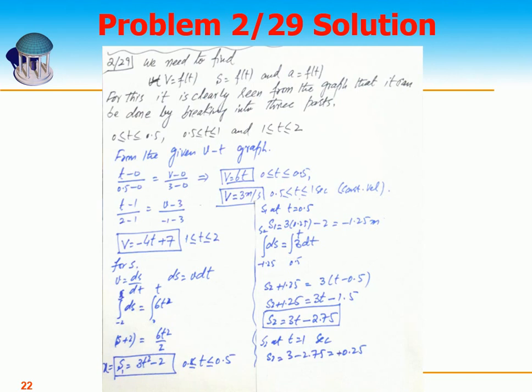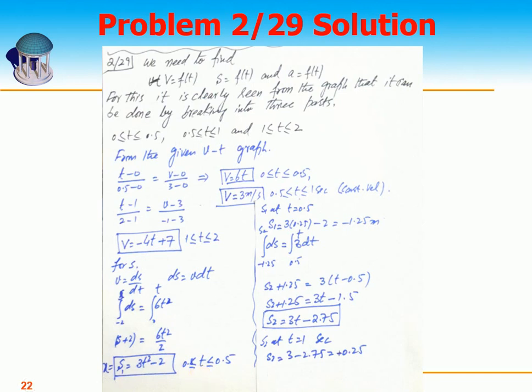Now I need to find displacement s. Since v equals ds/dt, we have ds equals v·dt. The initial displacement is minus 2, so we integrate from minus 2 to s on the left and from 0 to t on the right. Integrating v equals 6t, we get s1 equals 3t² minus 2, valid for 0 ≤ t ≤ 0.5. At t equals 0.5, s1 equals minus 1.25 meters.